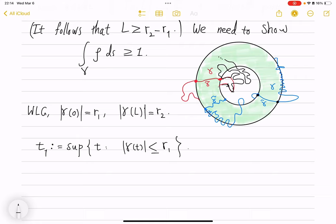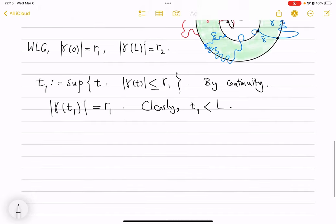We can see that this, of course, is non-empty set because 0 is there. And then by continuity, we can also see that at this very value, t1, this does belong to the circle. So, this is equal to r1. And clearly, again, by continuity and compactness argument, we see that t1 is strictly less than L. Because at L, you are on the outside circle.